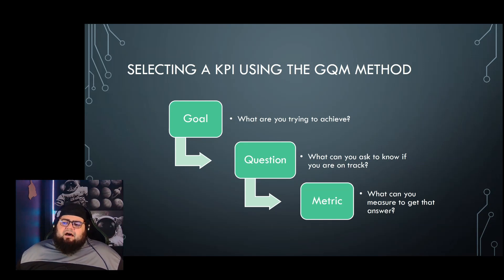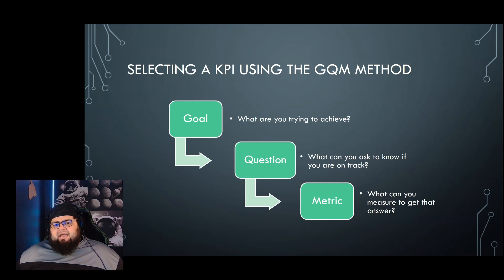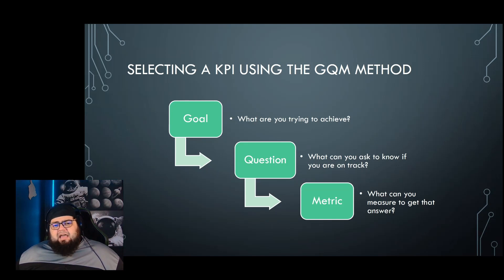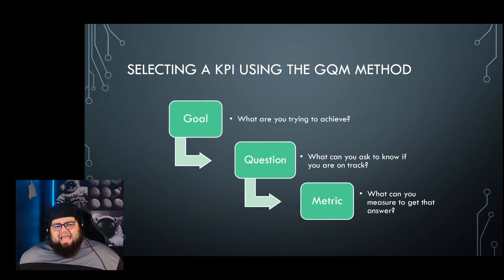So what's the GQM method? It's a multi-tiered approach to selecting indicators that will actually help you make decisions and drive outcomes. GQM stands for Goal, Question, Metric. The idea is that by understanding your goals, you can ask questions to understand where you are in achieving that goal, and your metric is the answer to those questions. KPIs are there to drive an expected outcome — the goal is that outcome, the questions tell you how close to success you are, and the metric is the trackable answer.